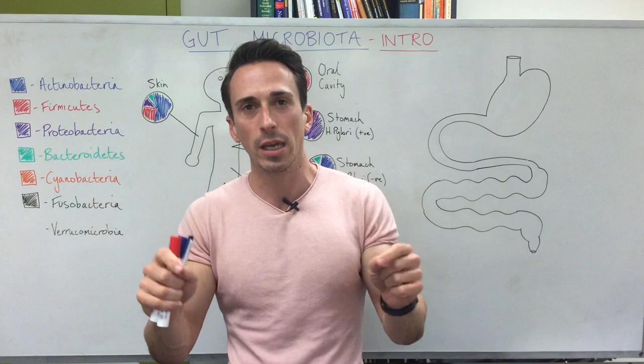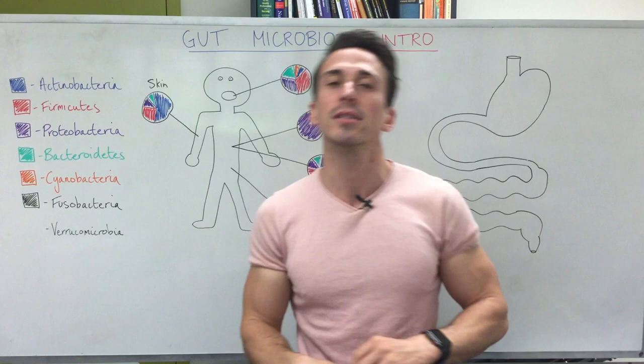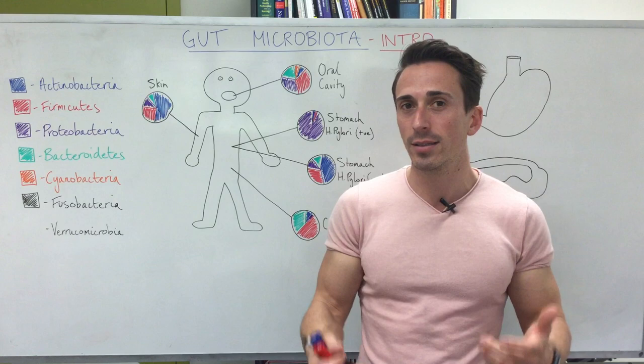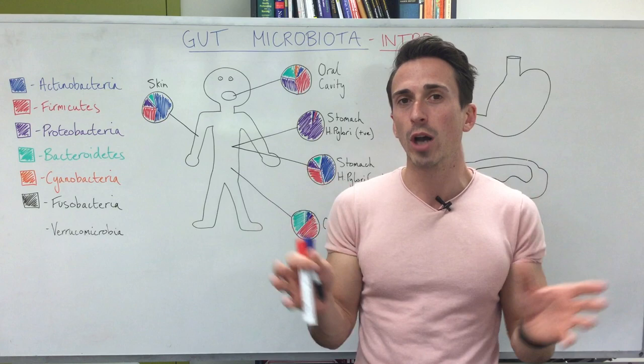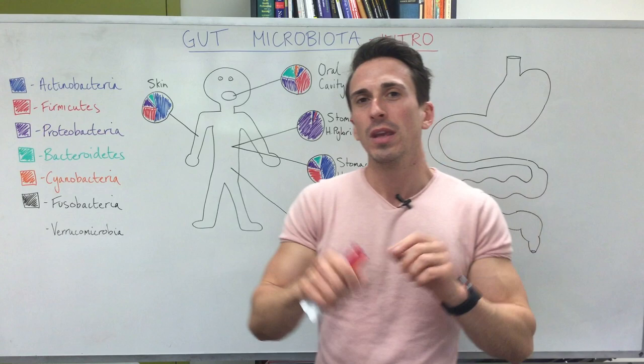Where do they sit? We know we've got huge amounts on our skin, in our nasal cavity, oral cavity, esophagus, stomach, small intestines, large intestines, and also various aspects of our respiratory tract and genitourinary tract as well. Basically every part of your body is going to have some form of microbe or microbiota associated with it. The anatomical location with the most microbiota is significantly the gut — the small and large intestines.